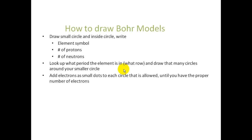You're going to add electrons as small dots to each circle that is allowed, remembering the rule from the chart from Podcast Part 1, until you have the proper number of electrons that that element has. Remember, your number of electrons should equal the number of protons.